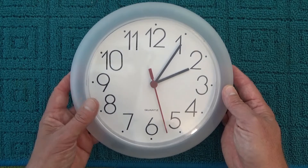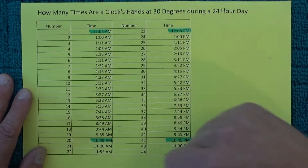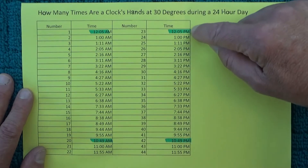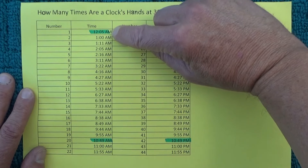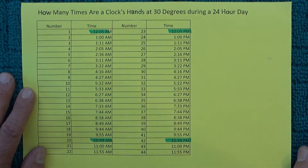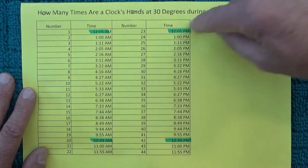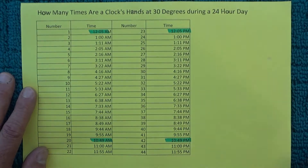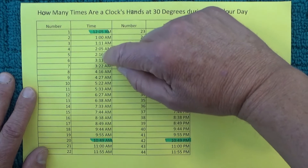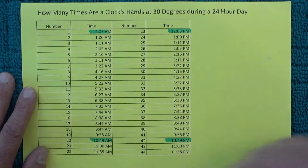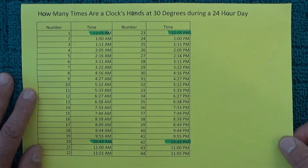To help you understand that it is only 44 times in a 24 hour day, I've prepared a simple grid which lists all the times in the morning and all the times in the afternoon and evening that the clock's hands make that 30 degree angle. You can see at the top it starts at 12:05, 1 o'clock, 1:11, 2:05, and 2:16. Every second time is advancing by 65 or 66 minutes — 1:11 to 2:16, 2:16 to 3:22, 3:22 to 4:27, and so on. There are 22 in the morning and another 22 in the afternoon and evening, giving 44 in a 24 hour day.